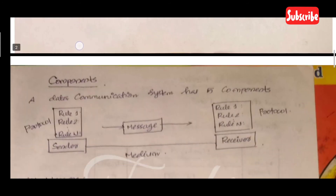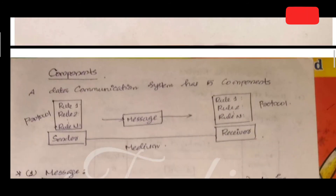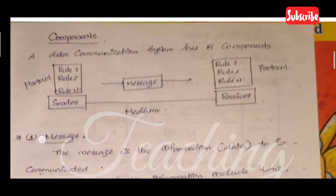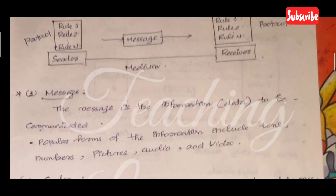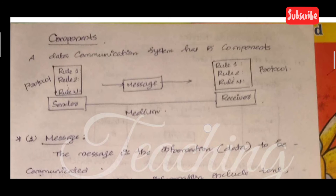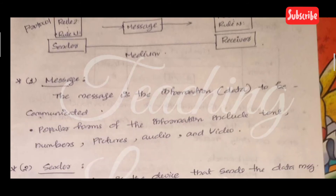The next topic is the data communication system, which has five main components: message, sender, receiver, medium, and protocol. The first component is the message — the information or data to be communicated. Popular forms of information include text, numbers, pictures, audio, and video.